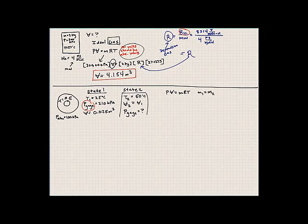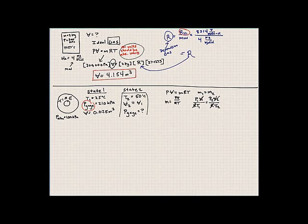If we solve for mass in the ideal gas equation, mass equals PV over RT. Knowing that mass one equals mass two, we can write P1V1 over RT1 equals P2V2 over RT2. The R values cancel because it's the same gas, and the volumes cancel since the tire is rigid. So pressure at two equals P1 times T2 over T1.